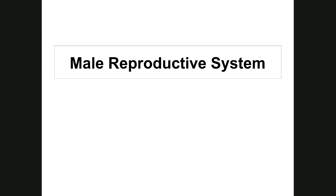This is our lecture on the reproductive system. Reproduction is the production of a new individual for the propagation of the species — essentially just making more of yourself.